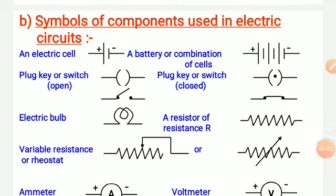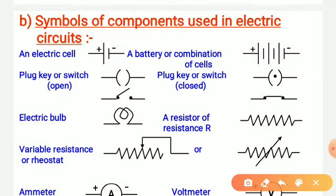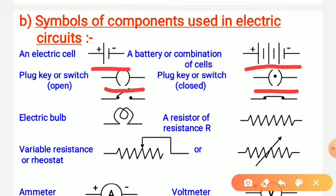We use symbols to represent components in an electric circuit. The symbol of an electric cell has one big line for the positive terminal and one small line for the negative terminal, representing a single cell. A battery is a combination of two or more cells, shown as multiple cells together — for example, a combination of three cells. The plug key or switch open means no flow of current; switch closed means current is flowing. The plug key's function is to turn current on or off in the circuit.